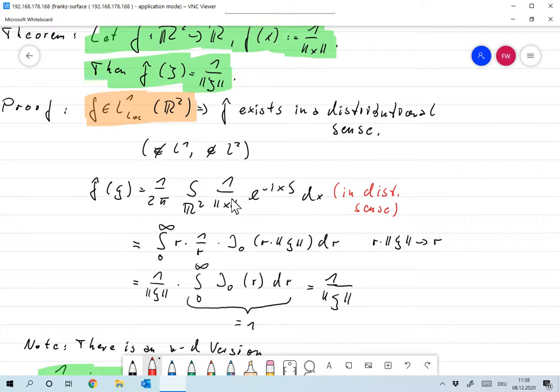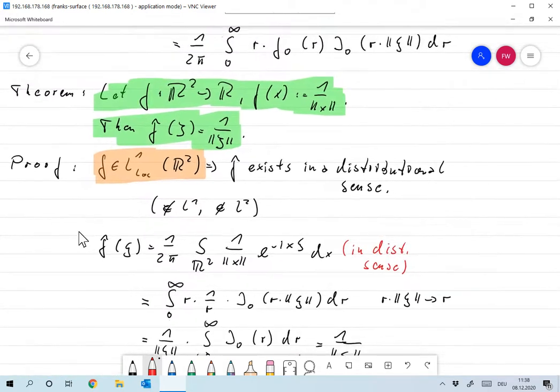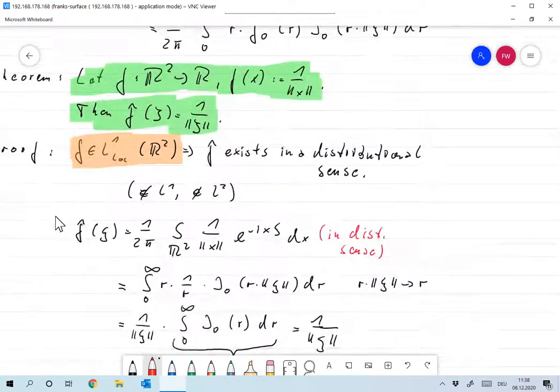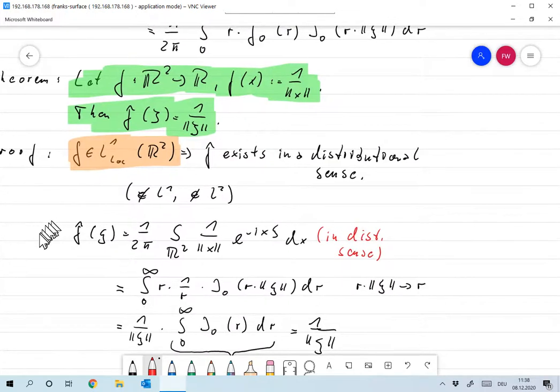Now, since this is radially symmetric, obviously we can plug in the formula we just proved. And then this is the integral from 0 to infinity. There it is. Integral from 0 to infinity. R times 1 over R times j0 of R times the norm of xi dr.